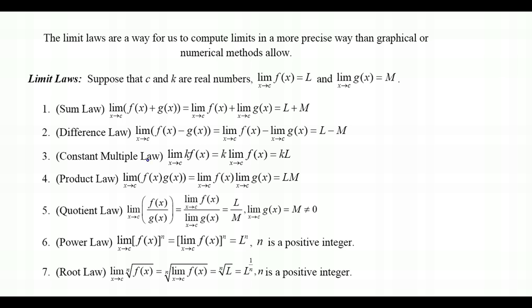The Constant Multiple Law says that the limit as x approaches C of K times f(x) — where K is a real number constant — allows us to pull K outside of the limit. So K moves to the front, and since the limit of f(x) as x approaches C is L, the final result is simply K times L.